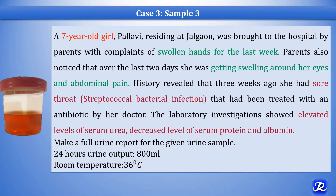History revealed that three weeks ago she had a sore throat — a streptococcal bacterial infection — that had been treated with an antibiotic by her doctor. Laboratory investigations showed elevated levels of serum urea, decreased levels of serum protein and albumin. Your task is to make a full urine report for the given urine sample.